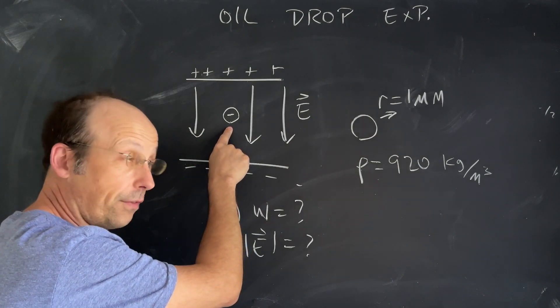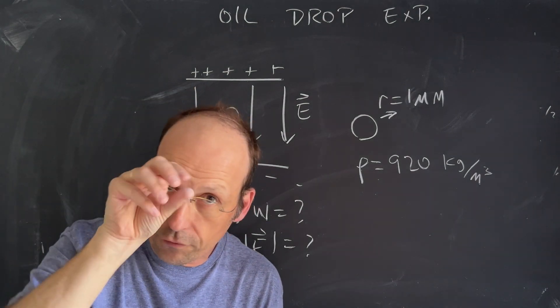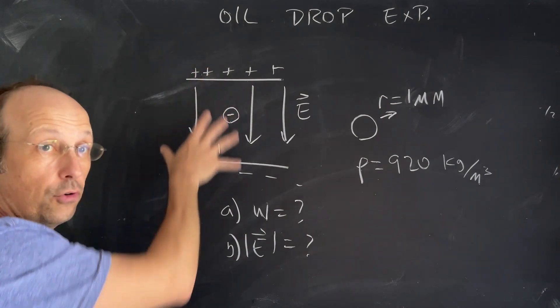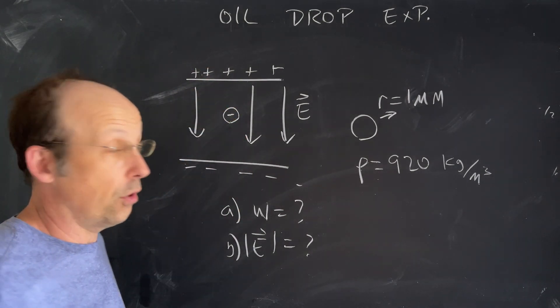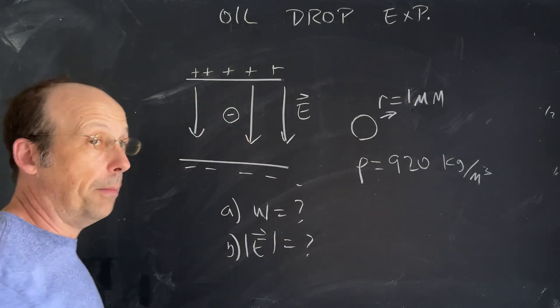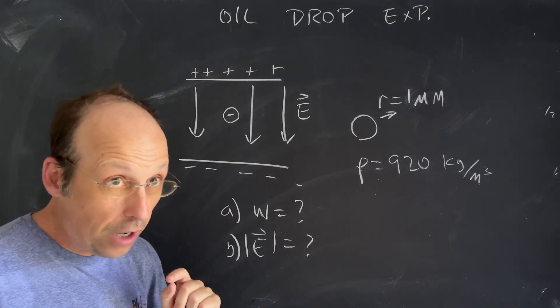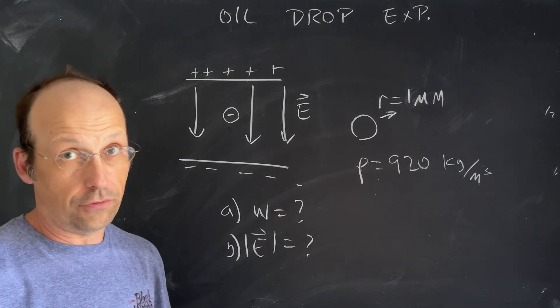Now there's an electric force on that and there's also gravitational force. If he adjusted the amount of charge on the plate you could change that electric field. You could adjust it such that the drop just stays there. Once it stays there you can use the size of the drop to calculate the charge on the drop.